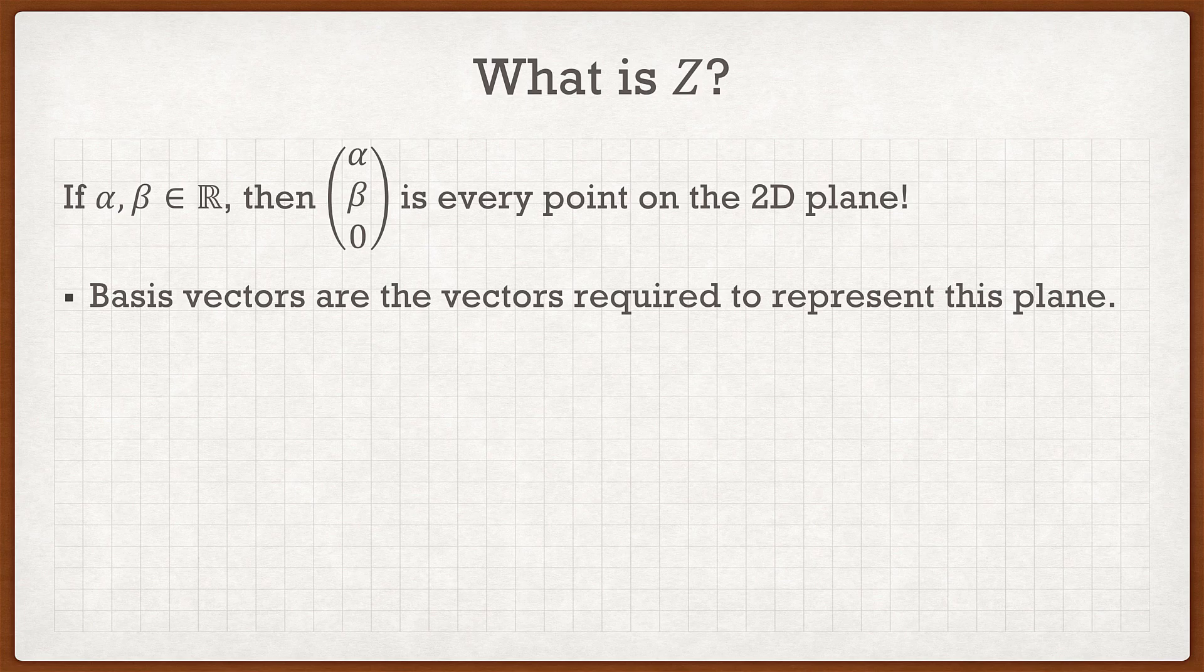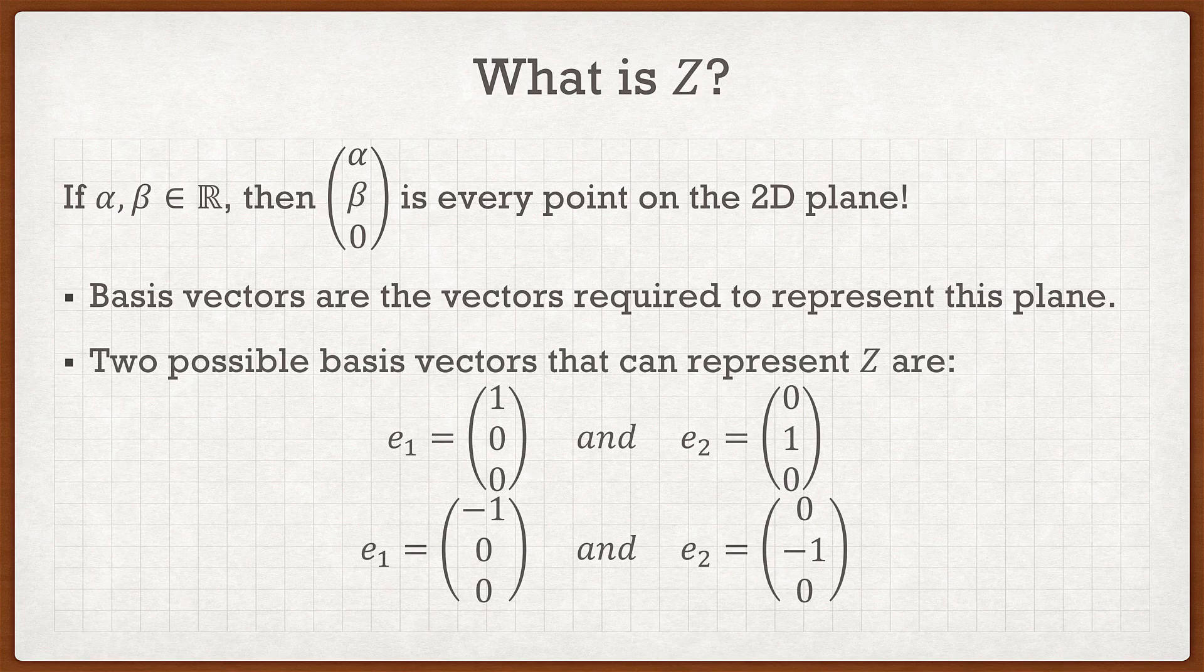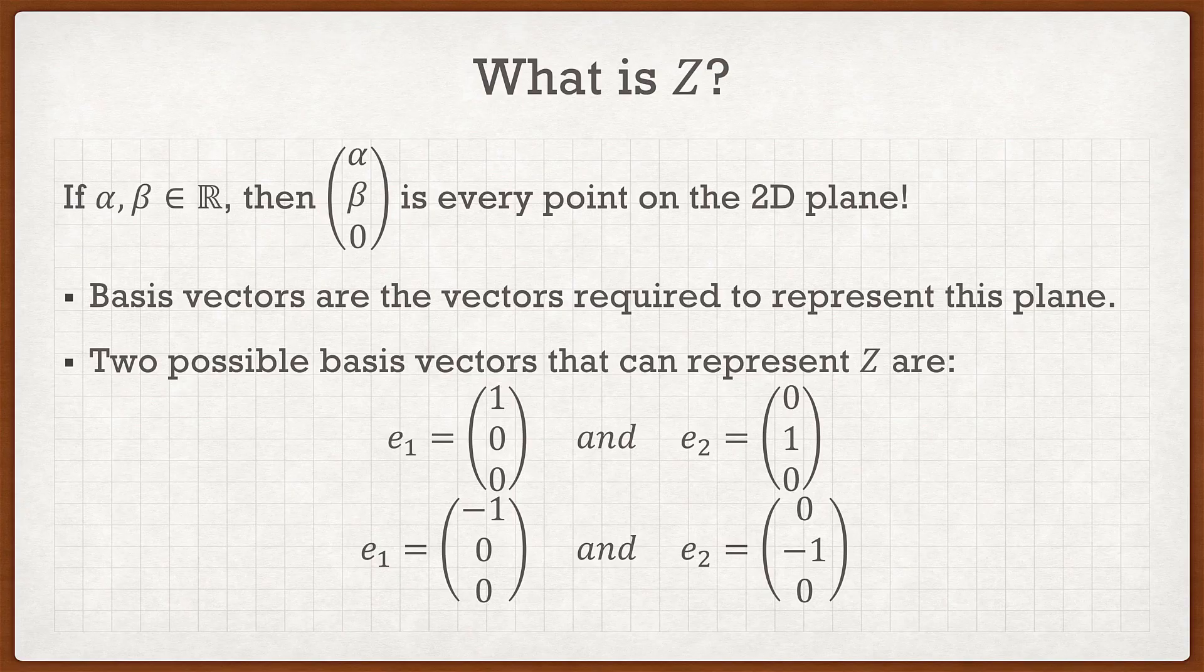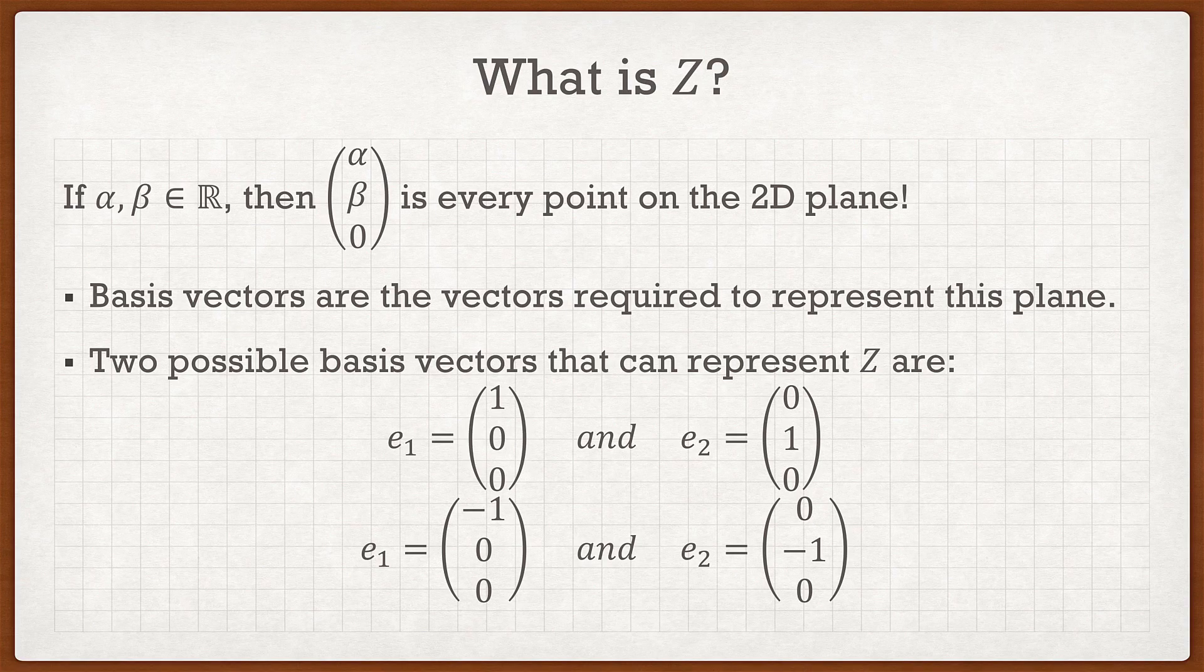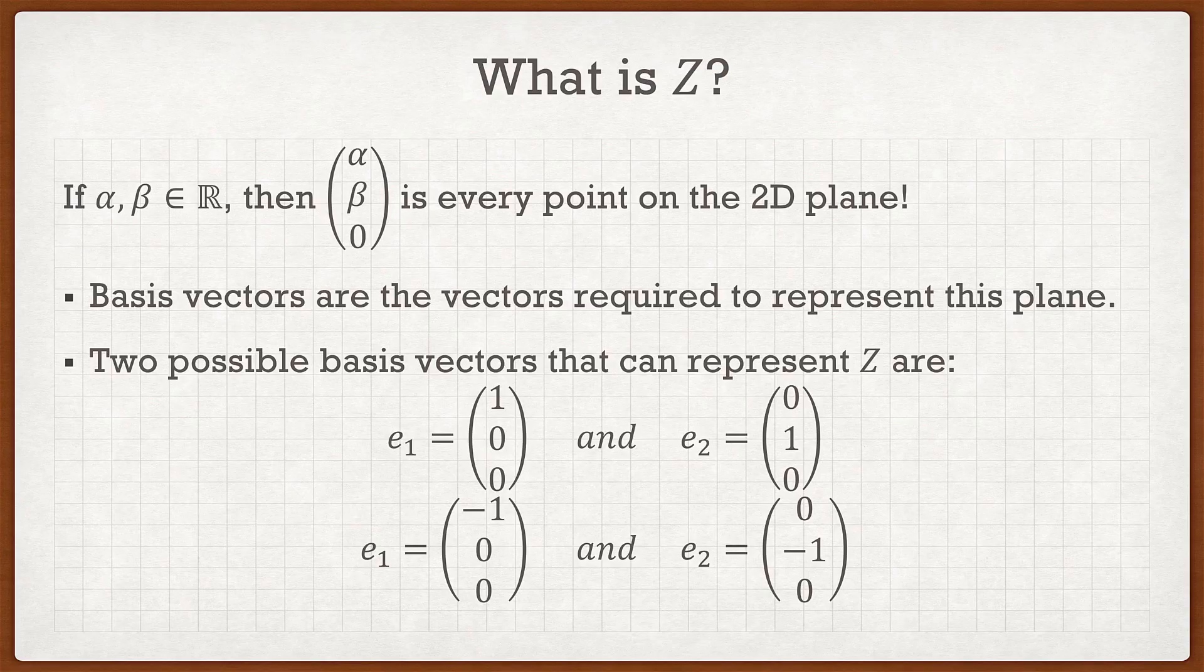But how do we define this plane? What plane are we talking about? Well this is where we need the basis vectors to represent this plane. So two possible basis vectors are these two right here: e₁ equals (1,0,0) and e₂ equals (0,1,0). Because I can conclude that any linear combination can be made up of these two basis vectors, can give me any value of α and β and 0.